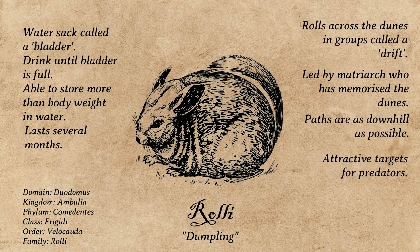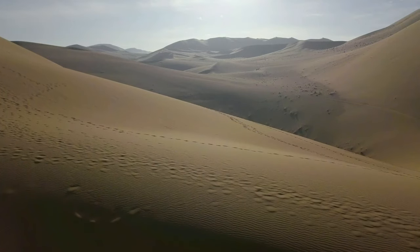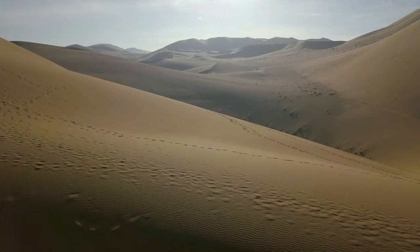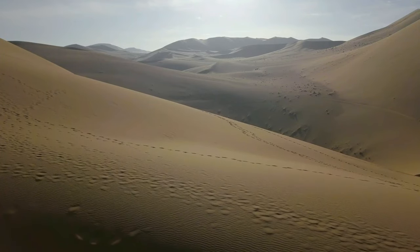Though rolli moving at full speed downhill are often too fast for many predators, meaning their best chance to survive their trips through the desert unharmed is to keep moving downhill as much as possible. Their paths are easily noticed, and many other creatures use them as markers for both easy navigation and directions to water.